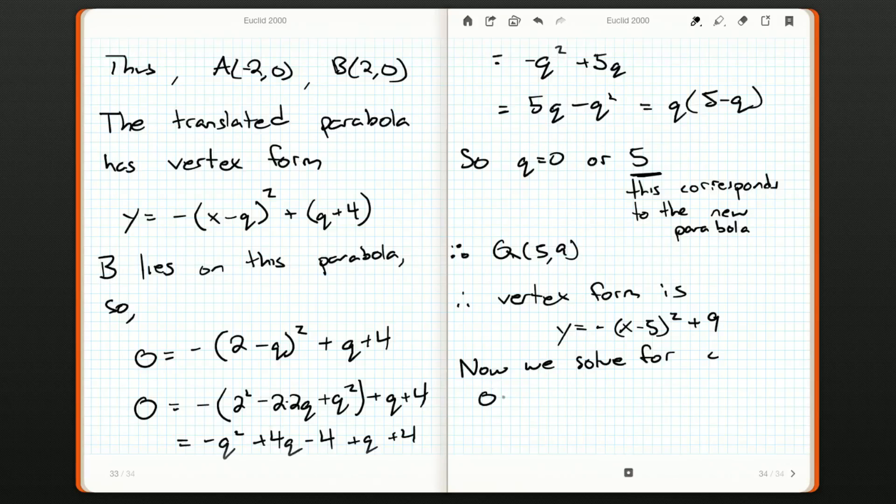So, now we can find the coordinates of C. It's going to be another one of the x-intercepts. So, 0 = -(x - 5)² + 9. And that's going to be -(x² - 10x + 25) + 9. Oh, minus 25. That's going to be -x² + 10x - 16.